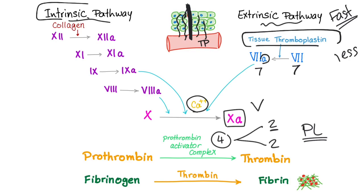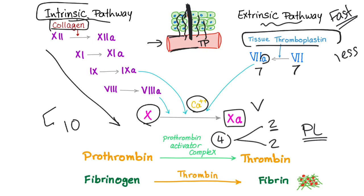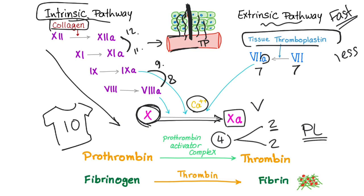We need a more efficient clot, so let's go to the intrinsic pathway. Intrinsic to the blood vessel — it needs something from within the vessel, like collagen, to activate the cascade. Like sports, the most important player has the number 10. Factor 10 is the most important. We have two factors after 10 — factors 12 and 11 — and two factors before 10 — factors 9 and 8. So the intrinsic pathway involves factors 8, 9, 11, and 12, with factor 10 as the hero. When you activate factor 10, you're done — prothrombin activator complex, then thrombin.